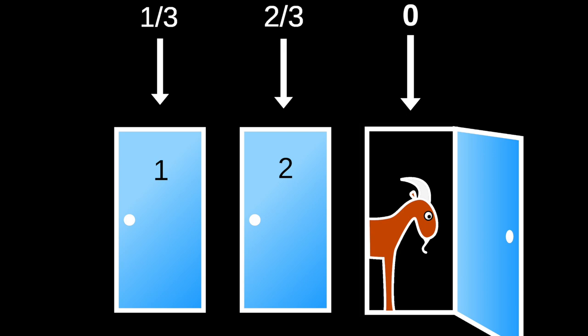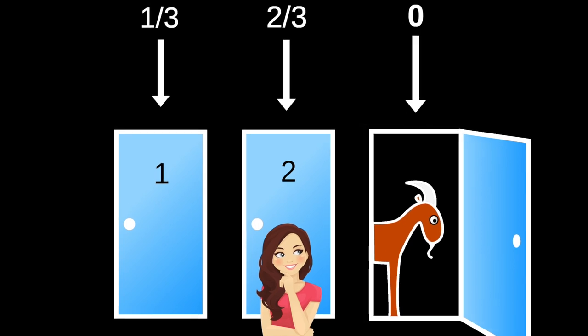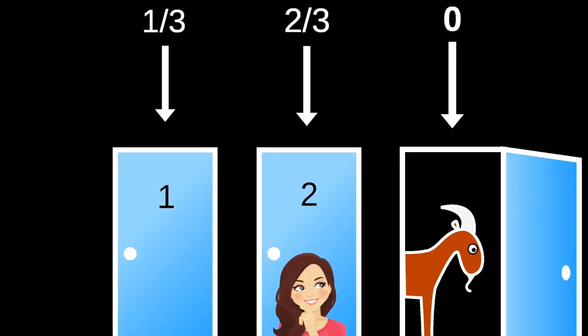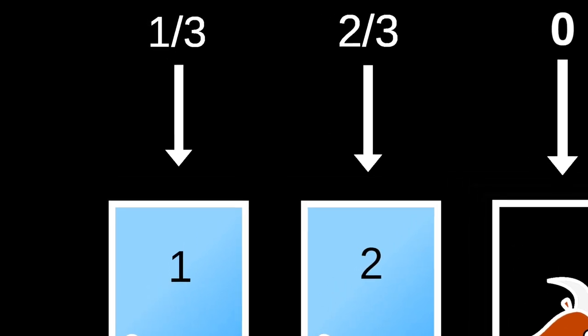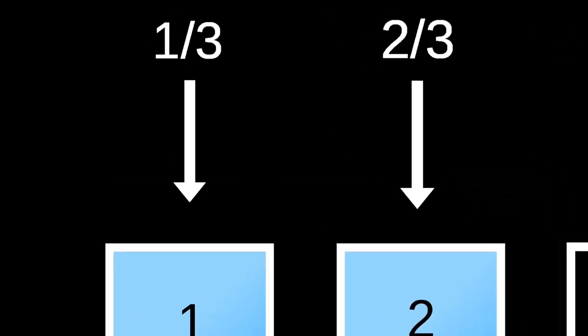This is a surprising result. If the contestant sticks with her first choice, she has a one-in-three chance of getting the car. But if she switches to door two, her chances go up to two-in-three. This result, that switching leads to the desired prize two out of three times, confounds our intuition that the odds between the two doors should be 50-50.